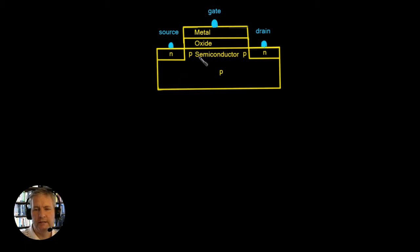Now it's a three terminal device. We can call one of these N types the source, we can call the other N type the drain and we can call the third connection here the gate.